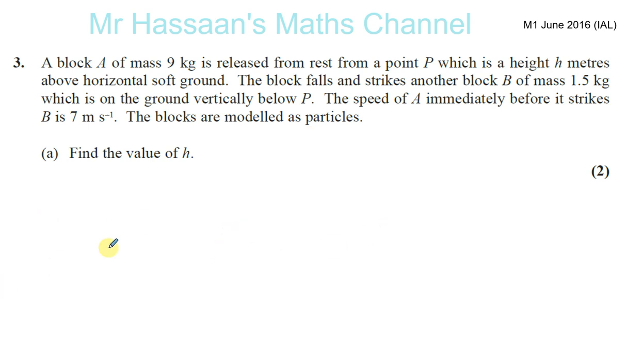So you have your block A. This is your block A. 9g. Its mass is 9 kg so that's 9g acting downwards. You have your horizontal ground.